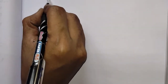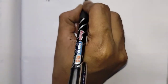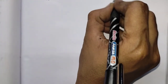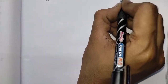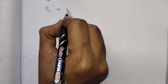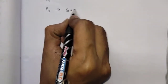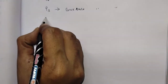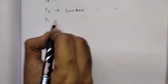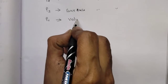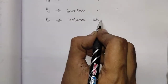They are rho_L, line charge density; rho_S, surface charge density; and the third one, rho_V, volume charge density.